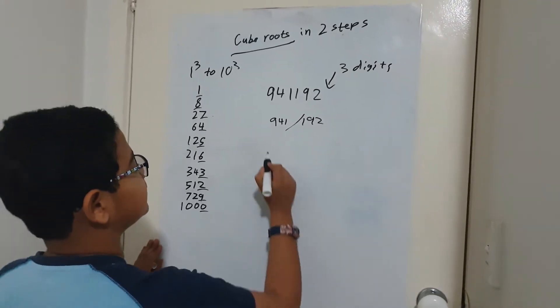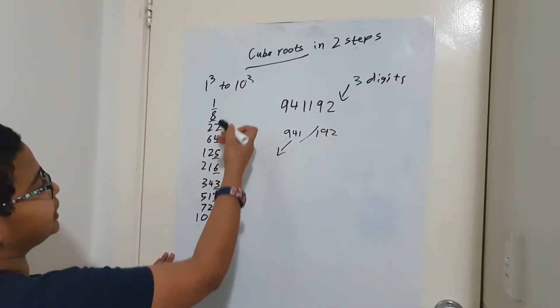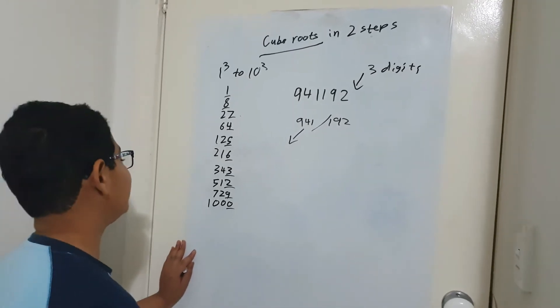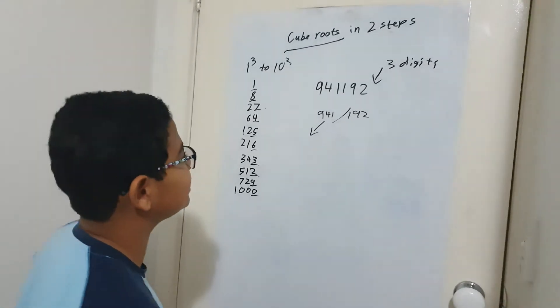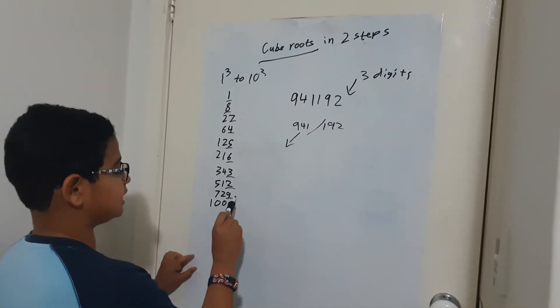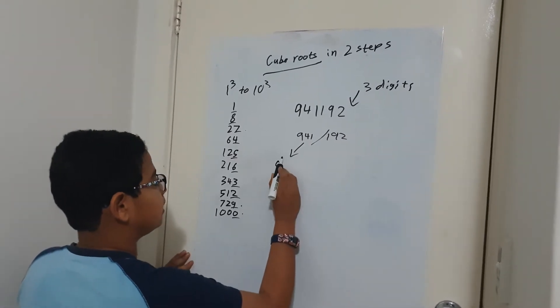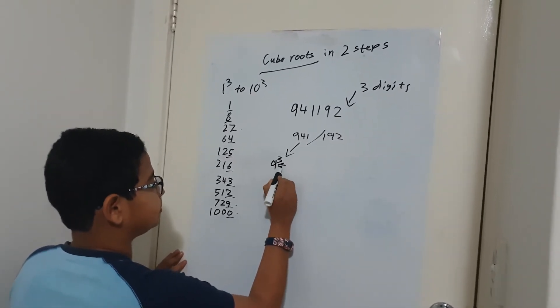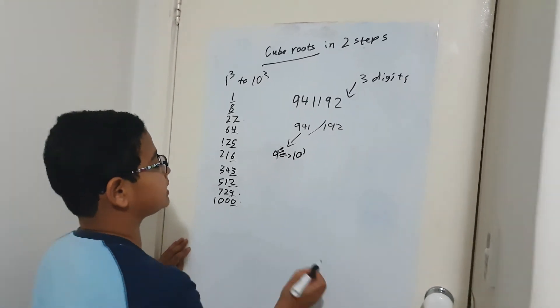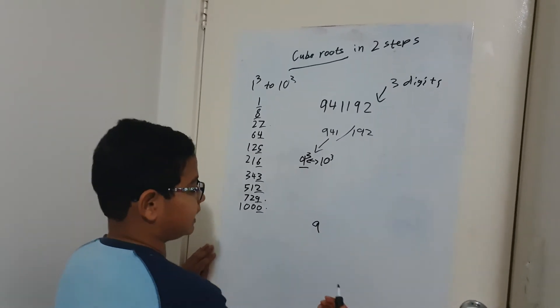And then what you want to do is take the first part, which is 941, and see which cubes it lies between. You might not have 941, you could have anything, any number, depends on what cube you have. So 941 I know is between 729 and 1000, so it's between 9³ and 10³. And then what you want to do is take the lower number, so 9, and that will be the first digit of your answer.